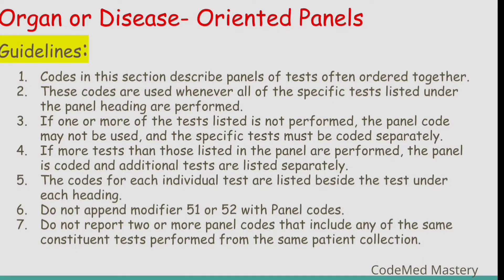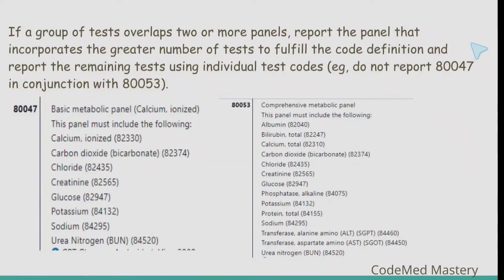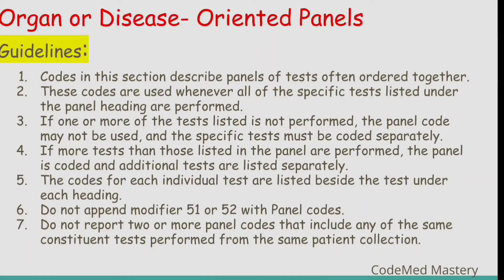The next guideline: if one or more of the tests listed is not performed, the panel code should not be used and the specific tests must be coded separately. The next guideline: if more tests than those listed in the panel are performed, the panel is coded and the additional tests are listed separately. The codes for each individual test are listed beside the test under each heading.